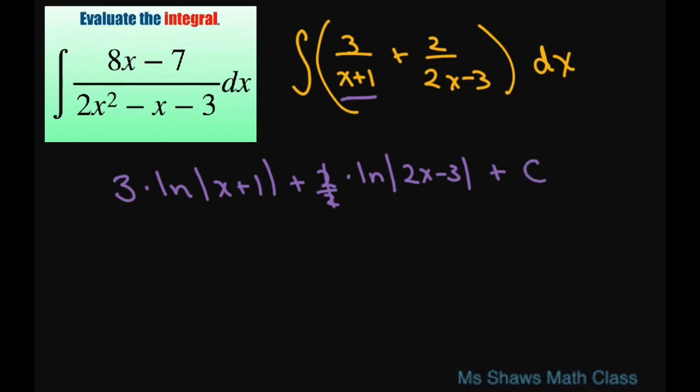Now, let's go ahead and condense this and write it as a single log. The first step I'm going to do is move my 3 up as an exponent. So I'm going to get ln of absolute value of x plus 1 cubed, and then you're going to times it by absolute value of 2x minus 3, because we're using the product rule for logs, plus C.